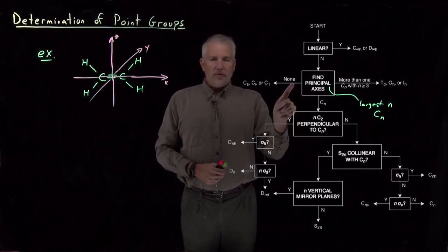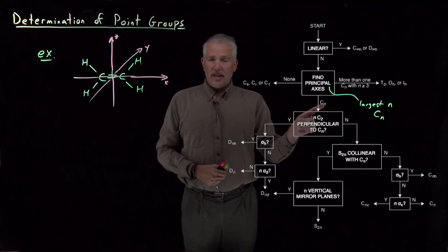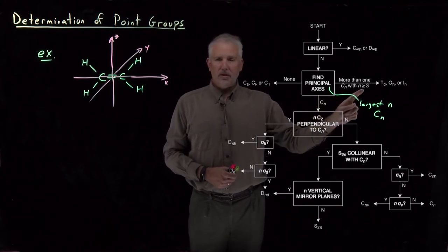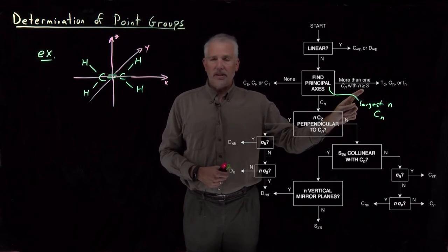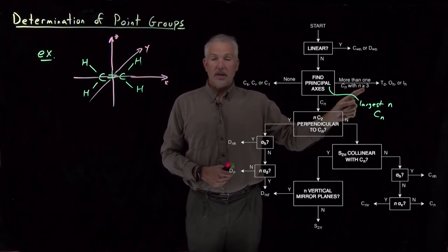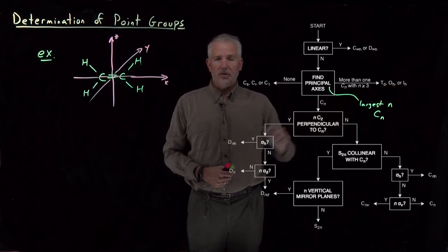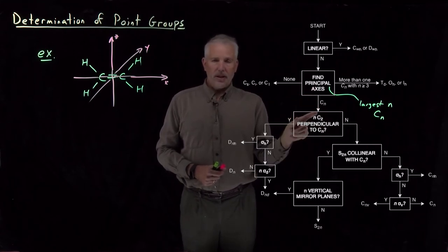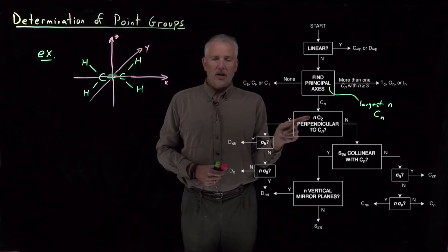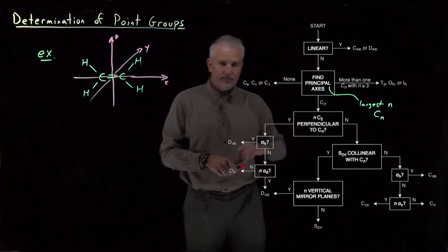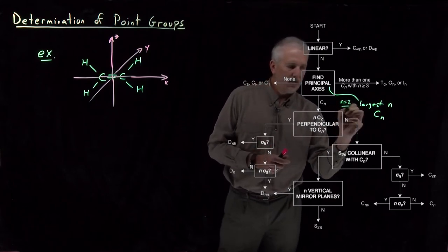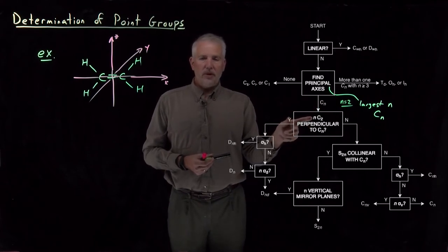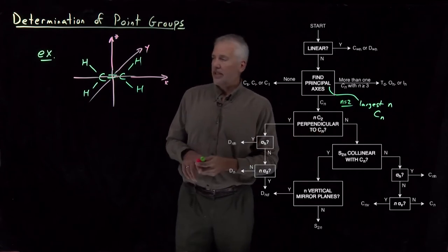So then we have a choice. Did we find no rotation axes? Did we find a single Cn axis of some sort? Or did we find more than one Cn? Yes, we did. With n larger than or equal to three? No. The rotational axes we found were C2s. If we had more than one C3, then we'd have one of these tetrahedral or octahedral or icosahedral point groups, perhaps. But instead, we just found some C2s. So we follow this line. The n that we found was a C2. So we found an n equals two C2 axis for our molecule. So n is two.